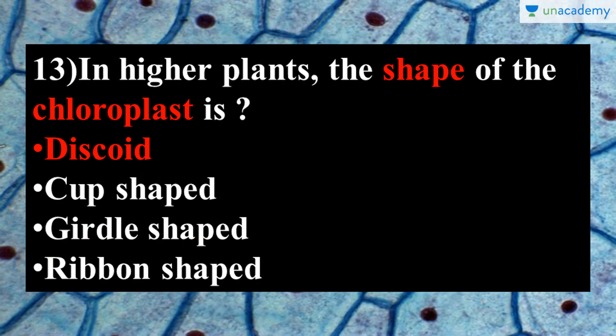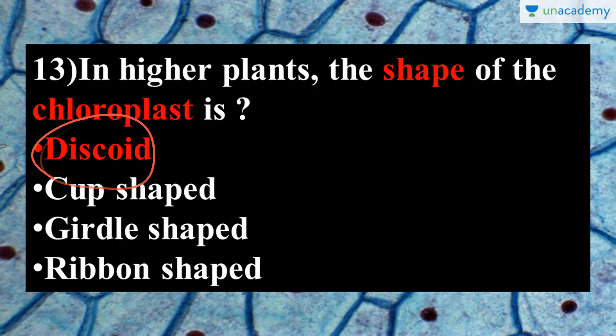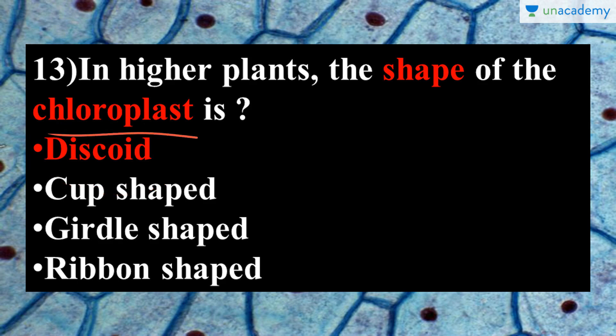The next question is: in higher plants, the shape of chloroplast is? In higher plants, the shape of the chloroplast is discoid. It is very similar in shape to the mitochondria, though their functioning differs. The correct answer is discoid shaped.